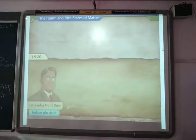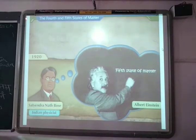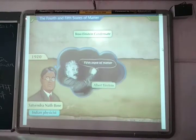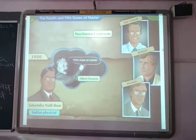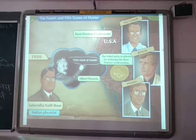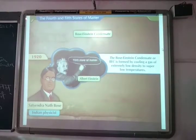The Bose-Einstein condensate or BEC is the fifth state of matter. In 1920, Indian physicist Satyendra Nath Bose made a study regarding the fifth state of matter. Based on his study, Albert Einstein predicted a fifth state of matter called the Bose-Einstein condensate. Scientists Eric Cornell, Carl Wieman of the USA received the Nobel Prize in Physics for achieving the Bose-Einstein condensation. The Bose-Einstein condensate or BEC is formed by cooling a gas of extremely low density to super low temperatures.